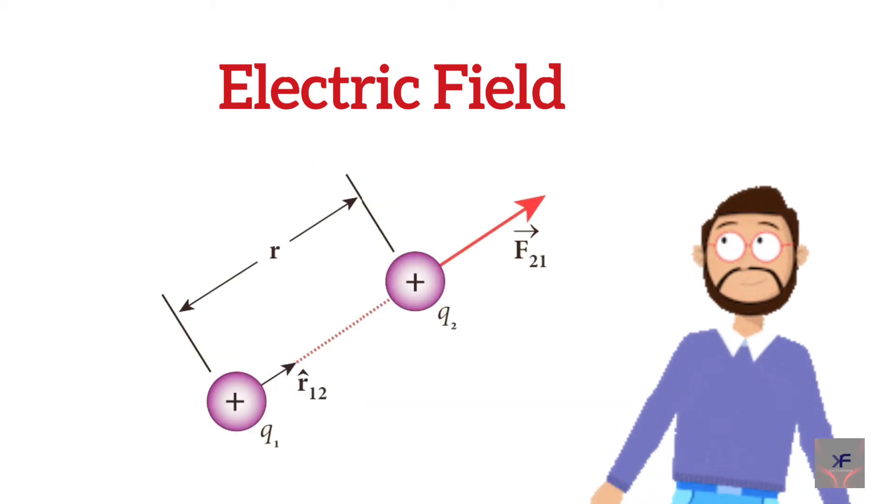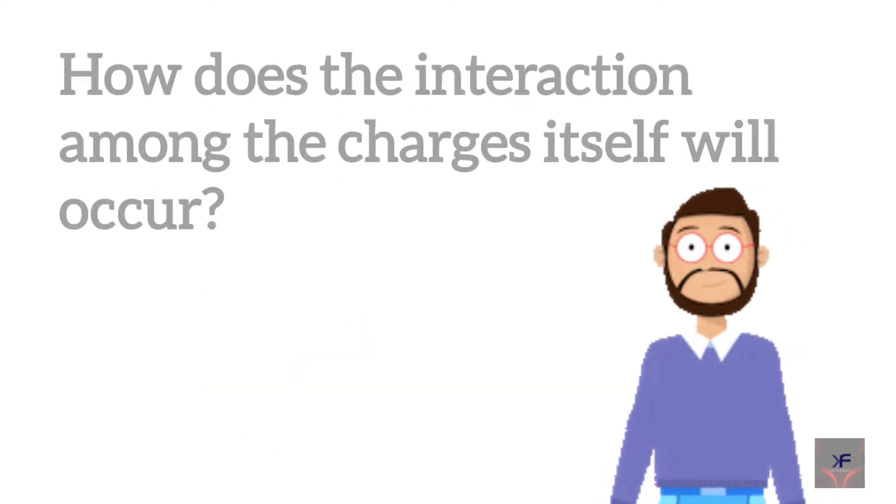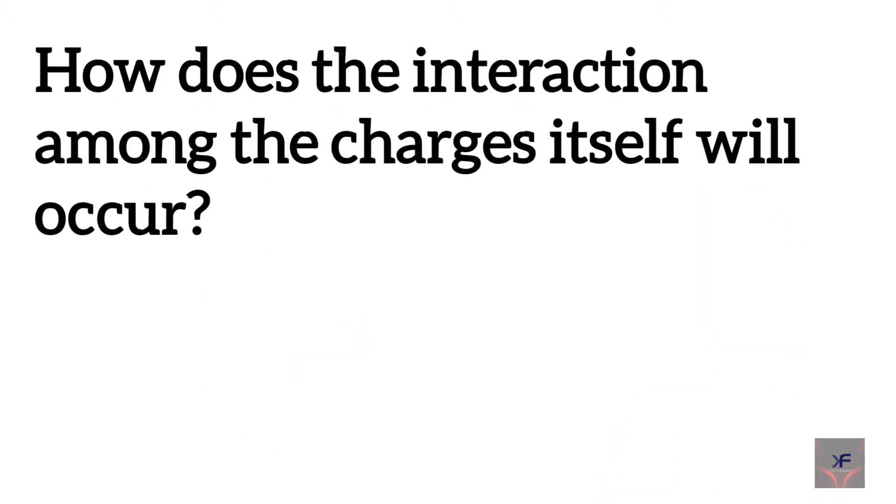So the interaction between two charges is based on Coulomb's Law. So now the question is, how does the interaction among the charges itself will occur?